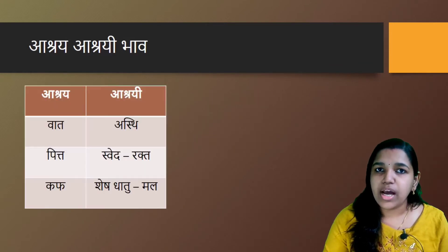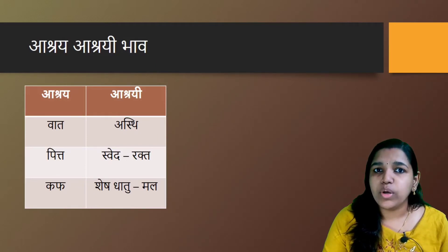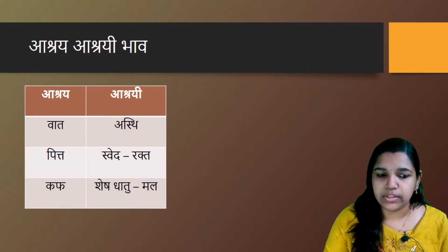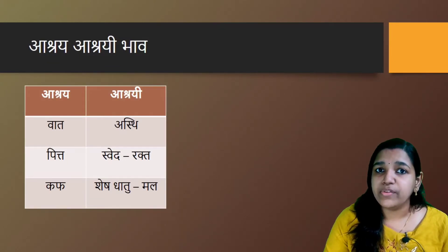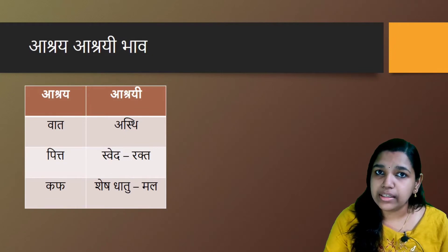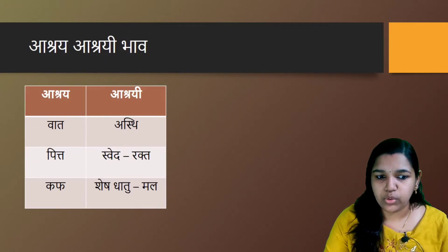The Aashraya Aashrayi Bhava, or Aashraya Aashrayi Sambandha, describes the relationship between the Dosha, Dhatu and Mala. Aashraya is that which takes shelter, and Aashrayi is that which gives shelter. Vata Dosha is the Aashraya associated with Asthi Dhatu. Pitta Dosha is associated with Sveda and Rakta, and Kapha Dosha is associated with all other Dhatus and Malas — except Asthi, Rakta Dhatus and Mala.